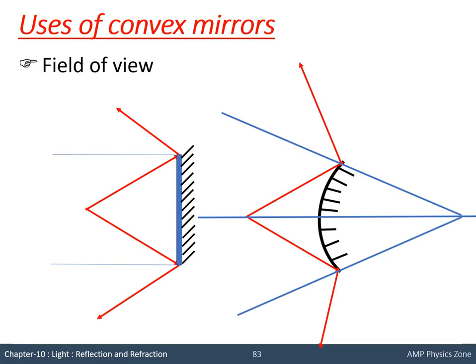If you place a plane mirror and a convex mirror side by side, you can see a larger area through the convex mirror compared to the plane mirror. For example, if you want to view a distant tall building through both mirrors, you can view the full building through the convex mirror because it covers a larger area compared to the plane mirror.